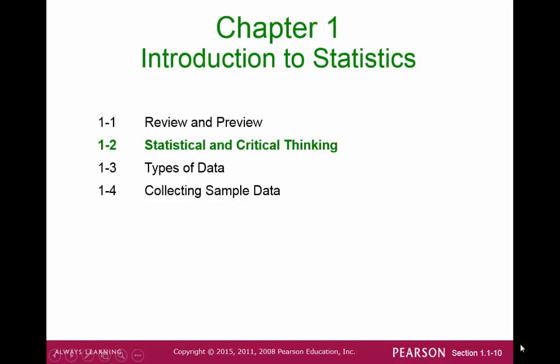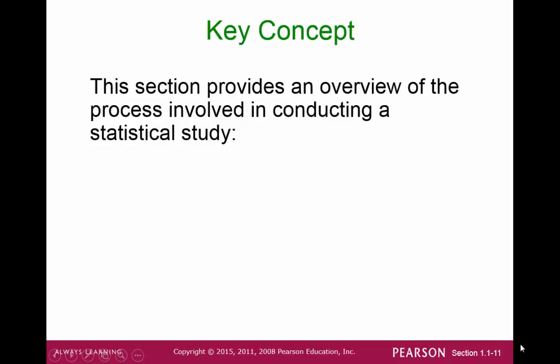Section 1-2: Statistical and Critical Thinking. The idea in this section is to provide an overview of the process when doing a statistical study. Our three main ideas are to prepare, analyze, and draw conclusions.